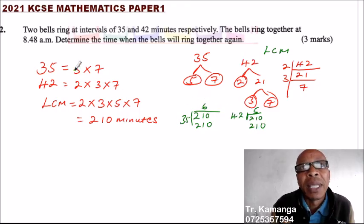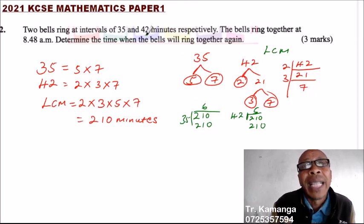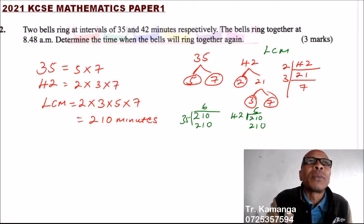It means after 6 times, the first bell, it will take 10 minutes. The second bell, 5 times, it is 210. 210 minutes, how many hours are these?